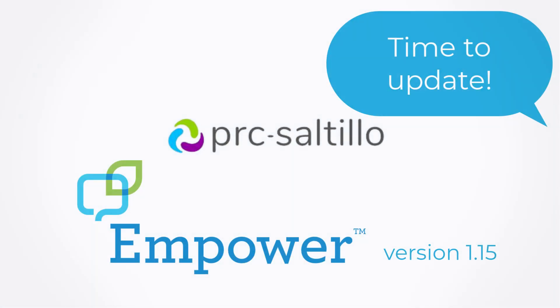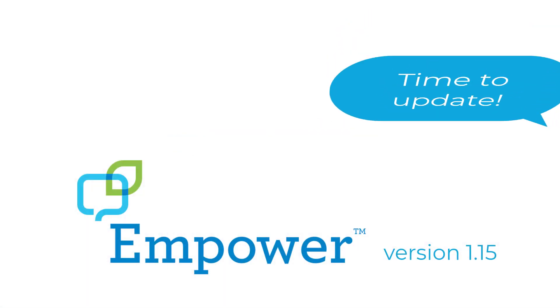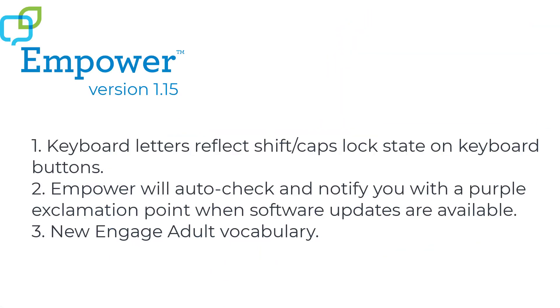What's new with Empower? Time to update to version 1.15. In this update, you'll be able to tell when your shift or caps lock is turned on in your keyboard. Empower now also auto-checks and notifies you with a purple exclamation point when a software update is available. And we've added new engaged adult vocabulary for older emergent communicators.